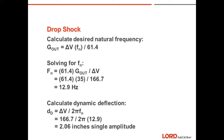We can use this to calculate the desired natural frequency. G's out equals delta V times Fn divided by 61.4. Solving for Fn: Fn equals 61.4 times G's out divided by delta V, which equals 61.4 times 35, divided by 166.7 — giving a natural frequency of 12.9 Hz. Now we calculate the dynamic deflection at the isolator due to the 36-inch drop. Dynamic deflection equals delta V divided by 2 times pi times Fn: 166.7 divided by (2 times pi times 12.9) gives a dynamic deflection of 2.06 inches single amplitude — the amount the isolator must deflect on the initial 36-inch drop.